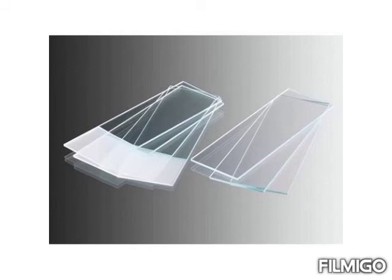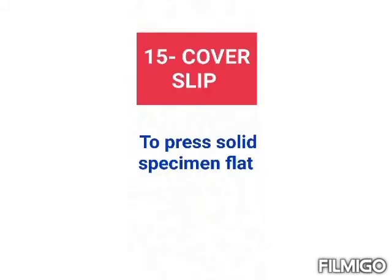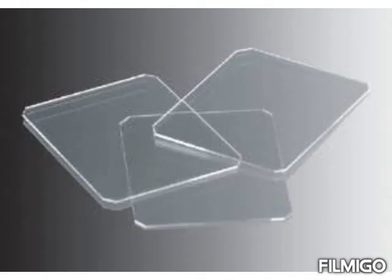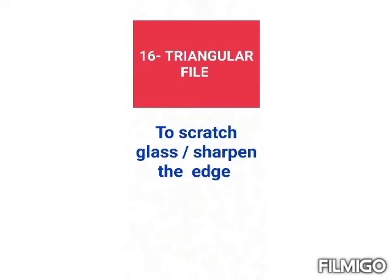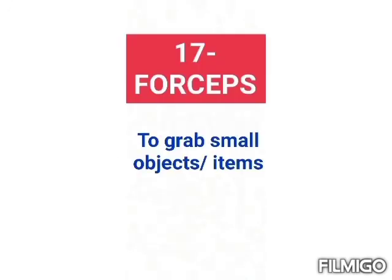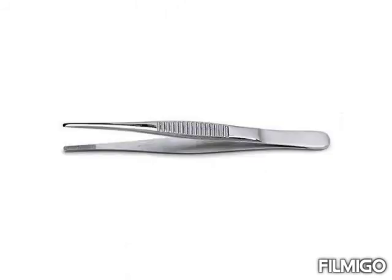Next is the cover slip, which is used to press and keep the specimen flat. Next is the triangular file, which is used to scratch or sharpen edges. Next is the forceps, which are used to grab small items or small objects, and are sometimes used to grab small weighing weights.